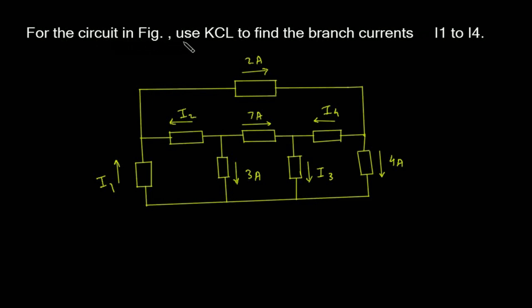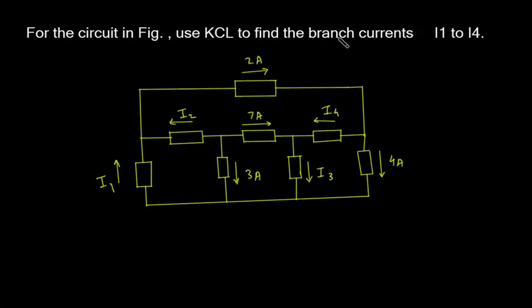For the circuit in figure, use KCL to find the branch currents I1 to I4.